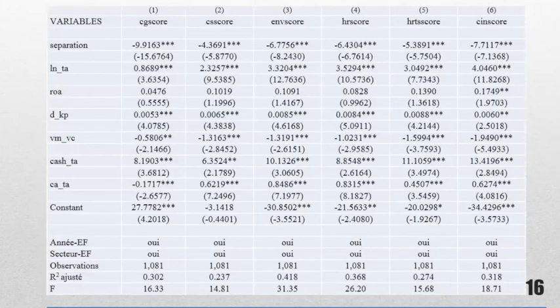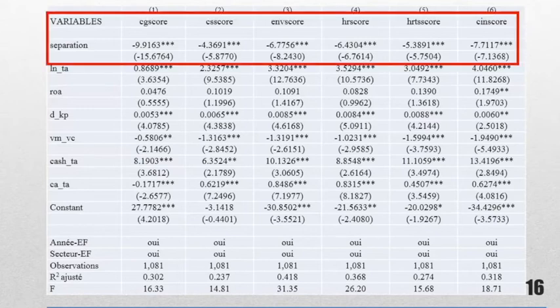The following table, we are interested in the six dimensions of CSR: governance dimension, environment, social and so on. What's interesting to see here is that the negative effect of separation is on the six dimensions, not only on governance score or environment score, but we have negative effect on the six dimensions.